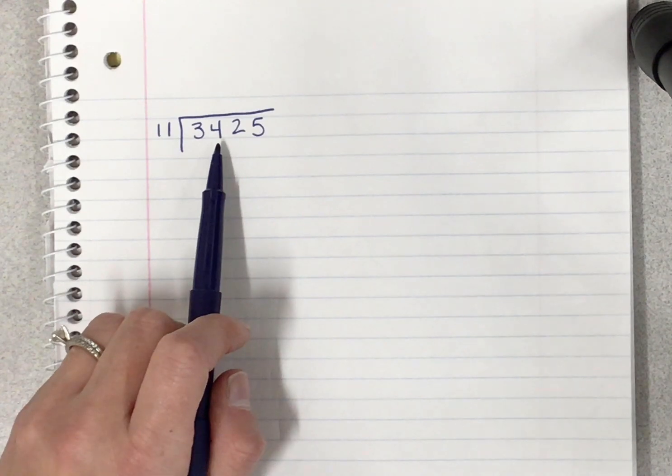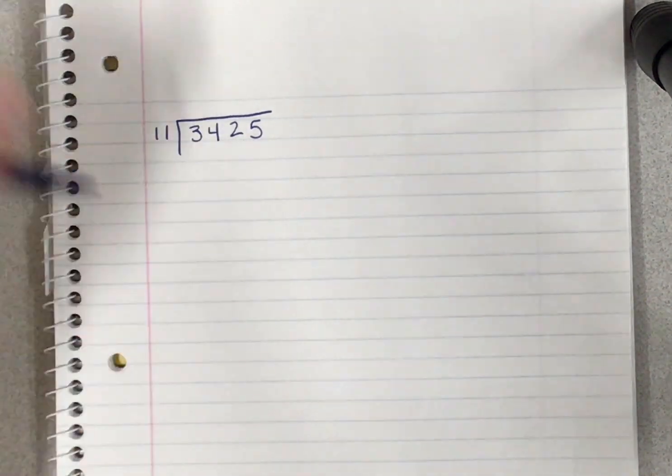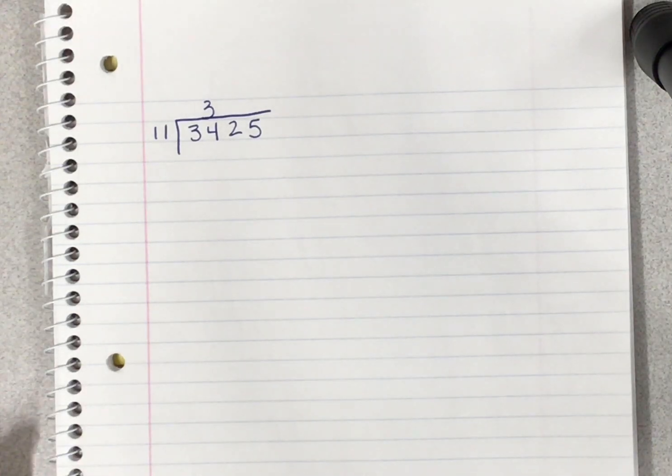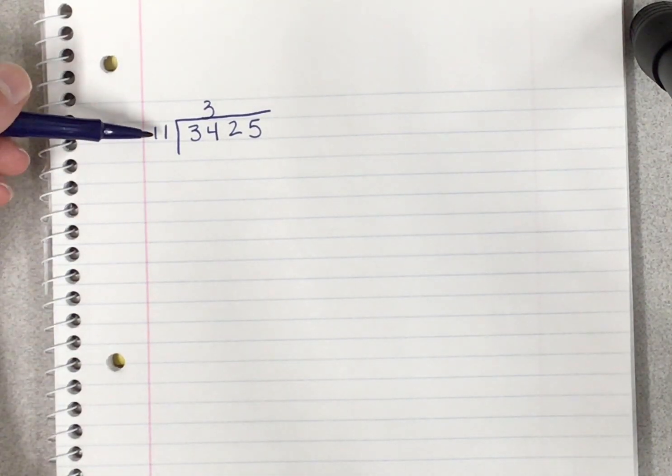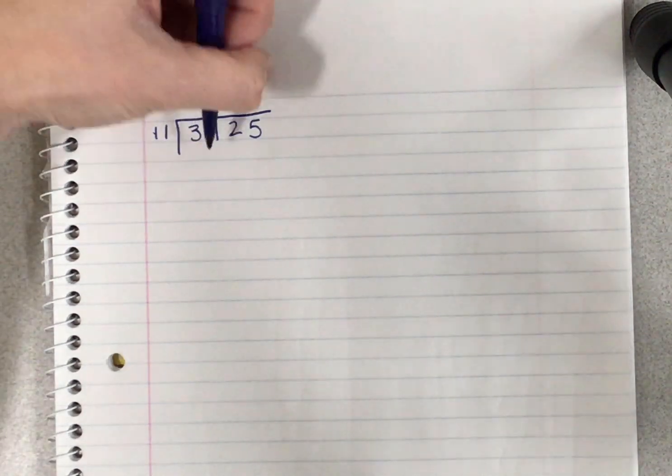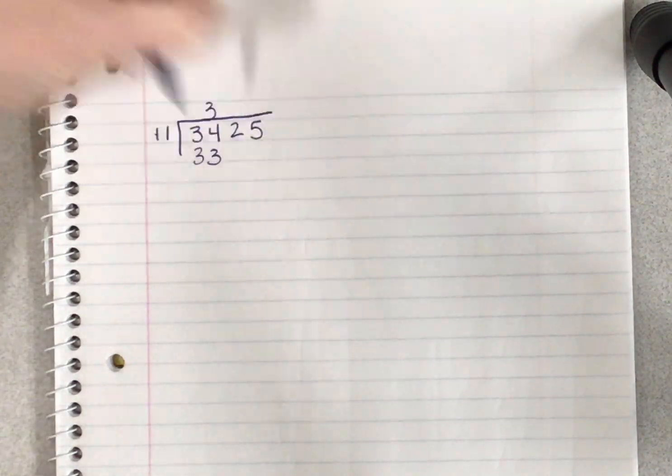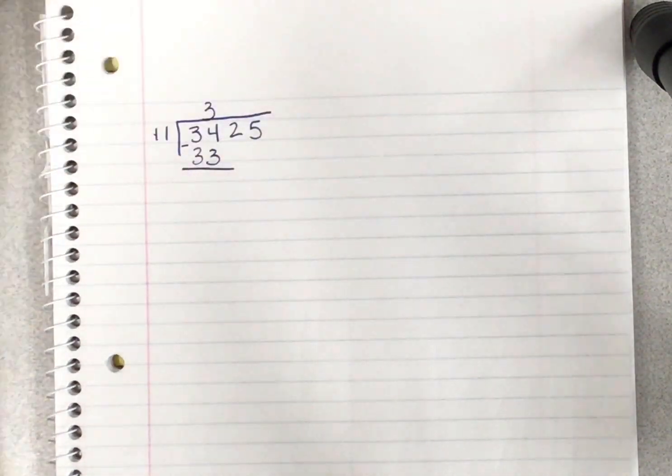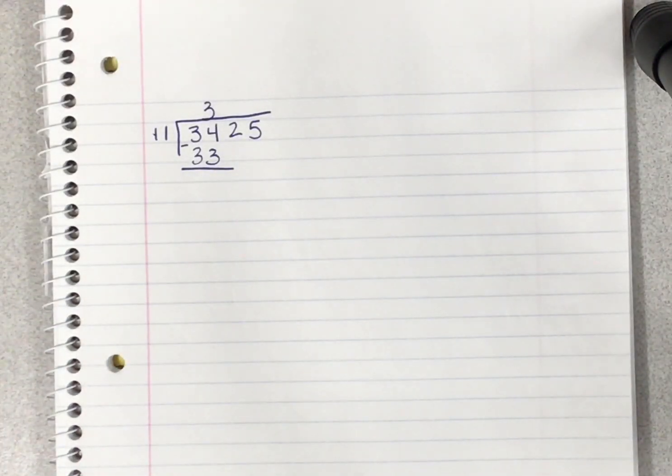Thinking about my 11 facts, I know 11 can go into 34 three times without going over. I place the 3 above the 4 in 34 and I think about that multiplication fact: 11 times 3 is 33. I write that below my 34 and I subtract. 34 minus 33 gives us 1.